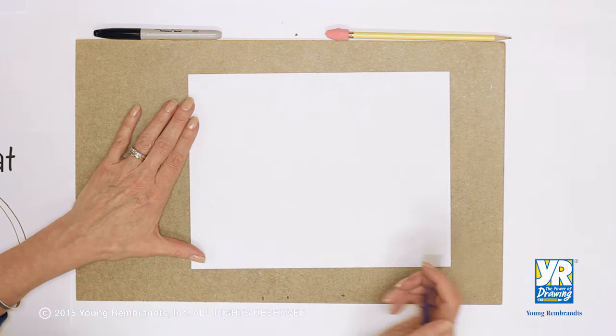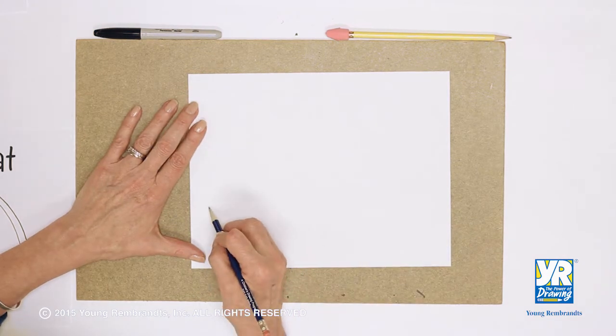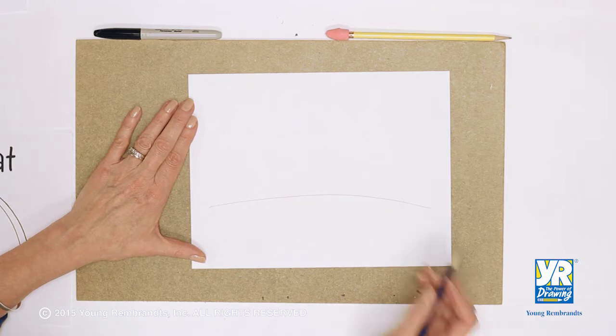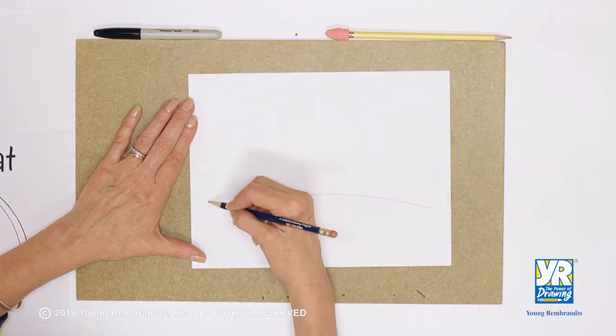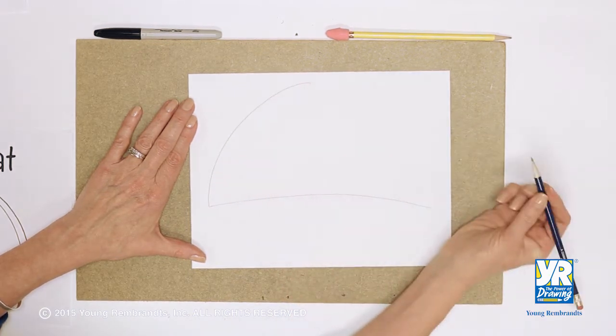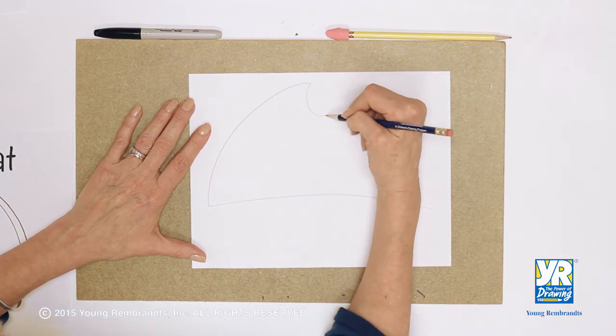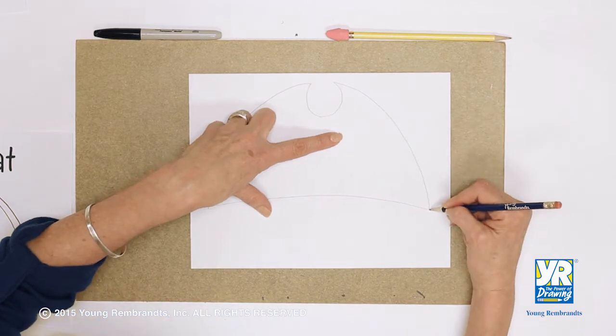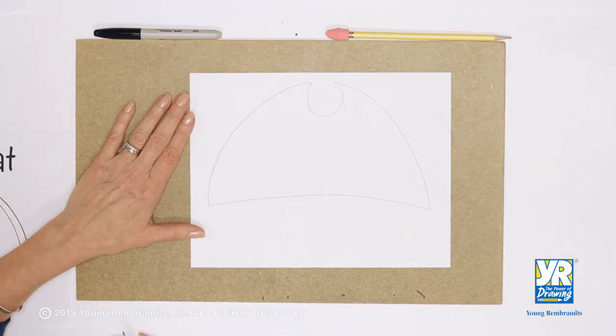Let's start with this line that's got to go all the way across the page. Then we're going to go to about the middle of the page, up to the top, and we're going to make a big kind of a dip and go back down to that side. There's our pirate hat.